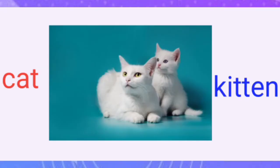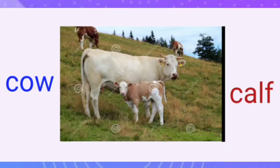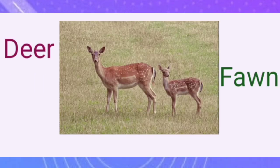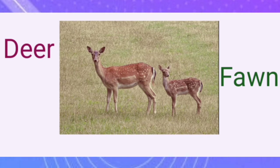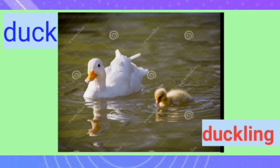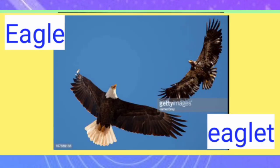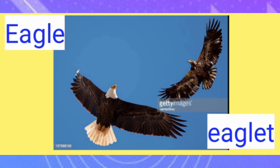The baby of cat is kitten. The baby of cow is calf. The baby of deer is fawn. The baby of duck is duckling. The baby of eagle is eaglet.